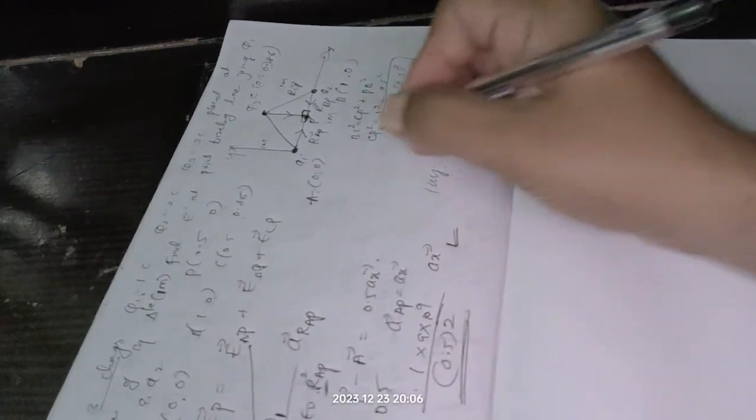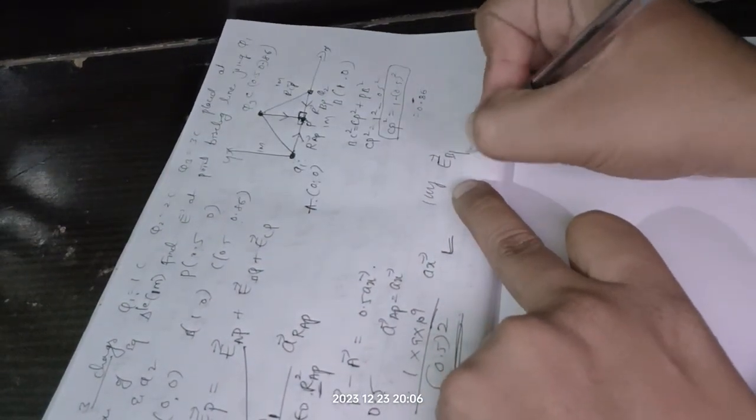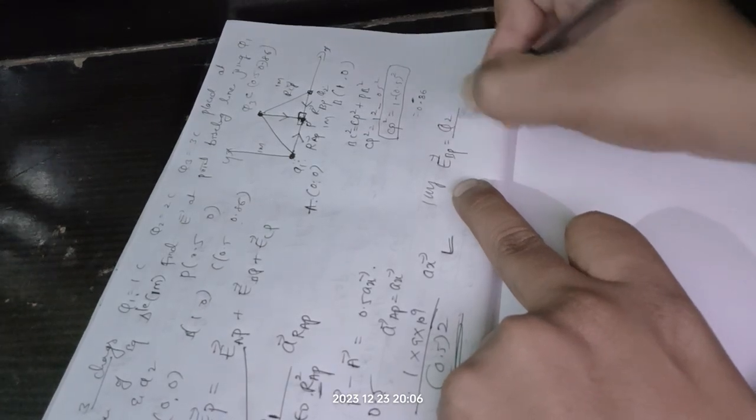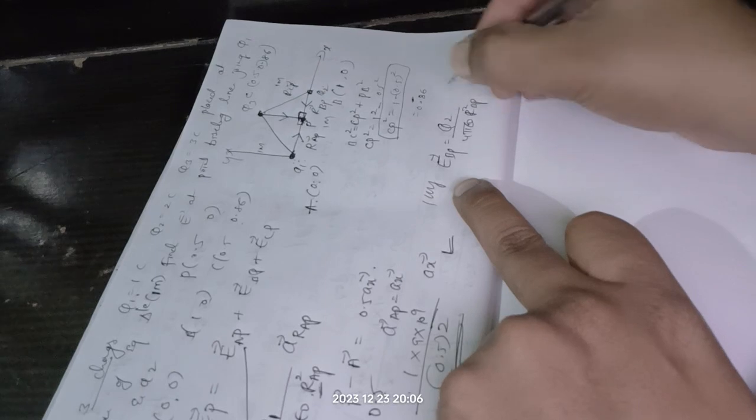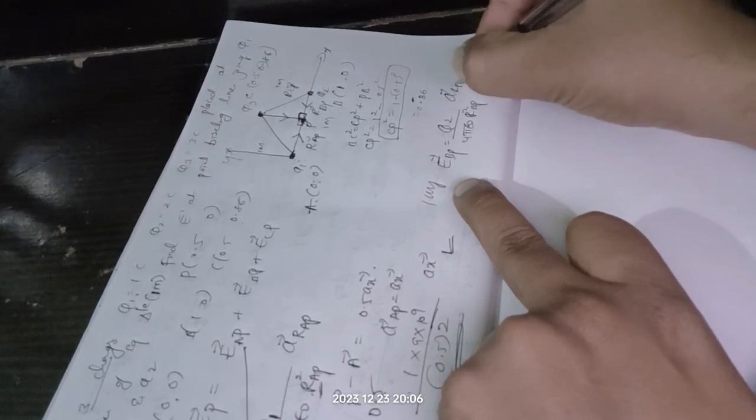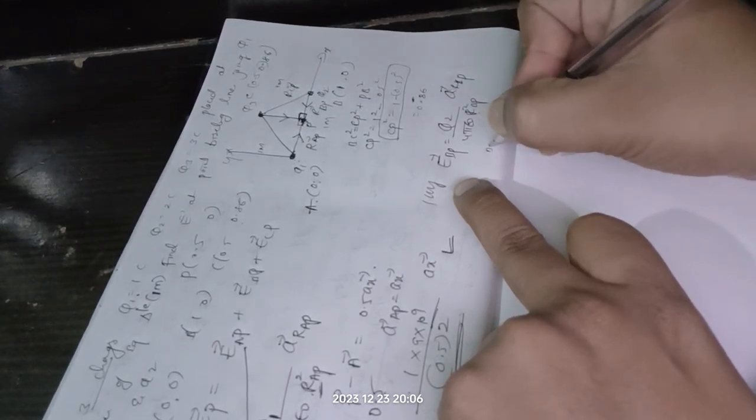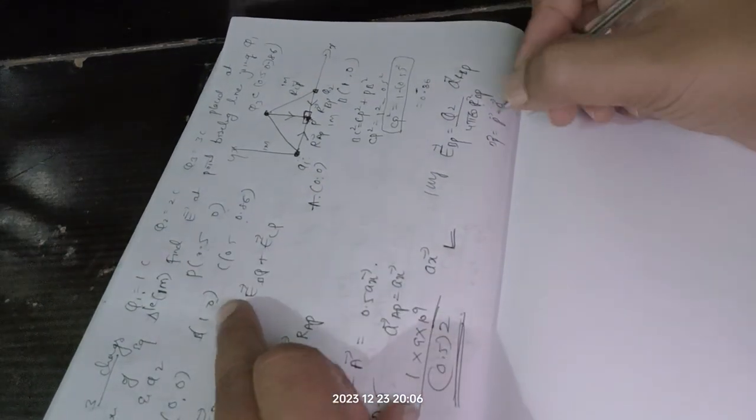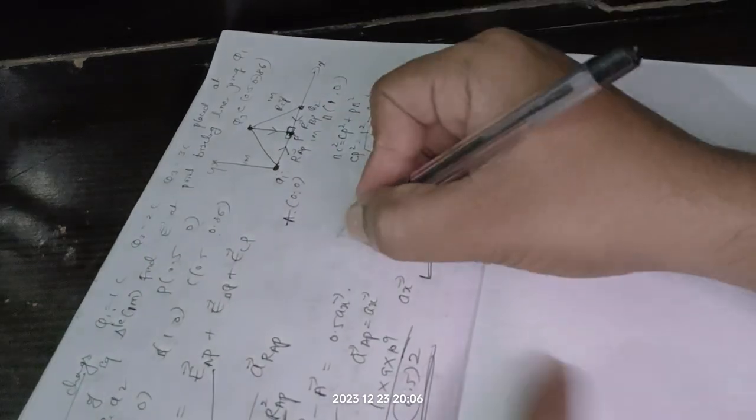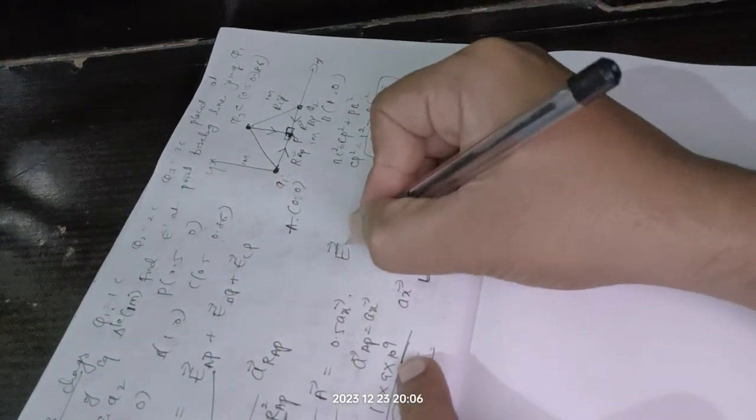Similarly, so have the formula with respect to E_BP. So it is charge q2/(4πε₀r_BP²), so it is a_r_BP. So here now BP you should find, how to find BP? P minus B. P is known, B is known, so similarly calculate. Similarly you should calculate the E_CP.